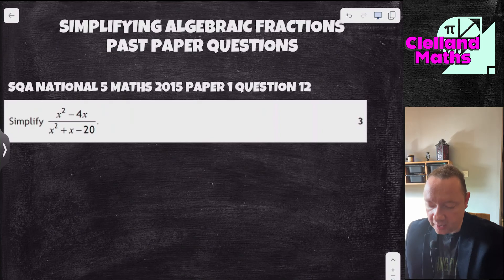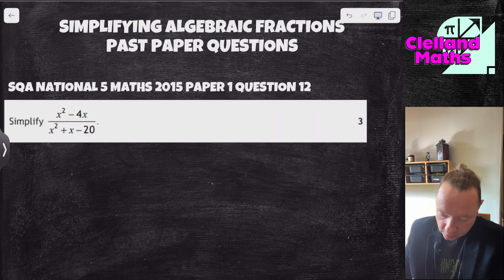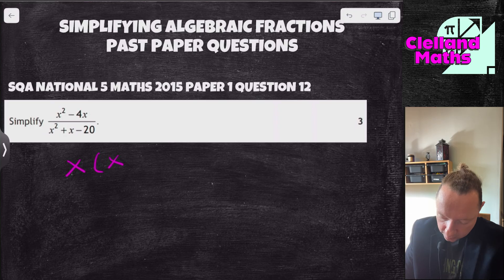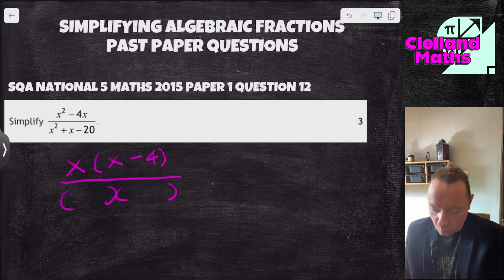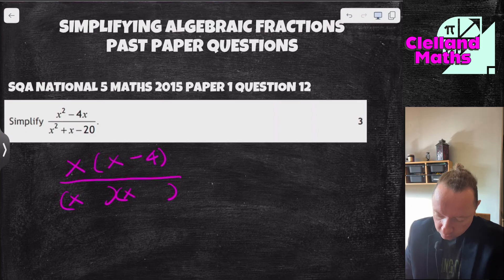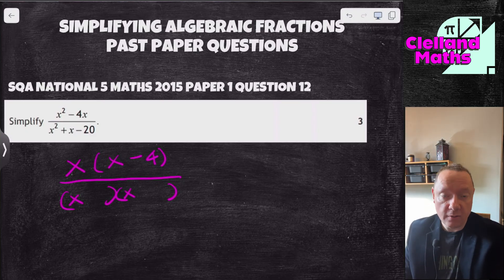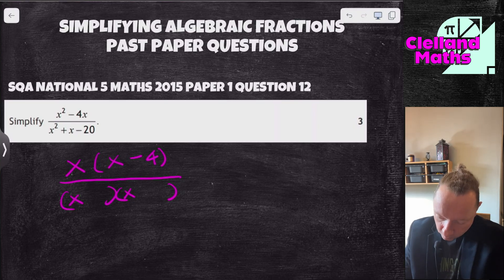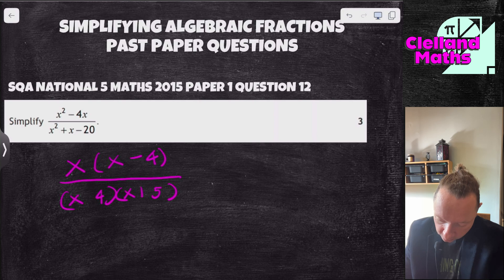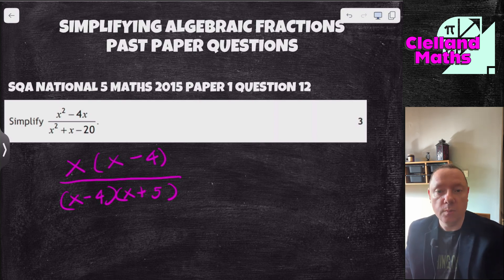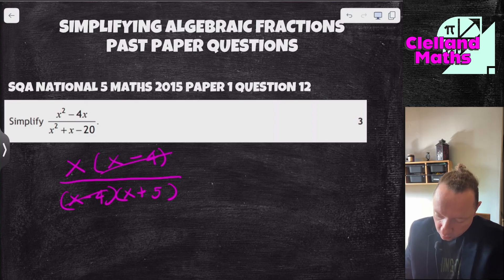Past paper question: National 5 Maths 2015 paper 1 question 12. Simplify x² minus 4x over x² plus x minus 20. The top has common factor x, giving x(x-4). The bottom: two numbers multiply to 20 and add to 1 — that's 5 and minus 4, so (x+5)(x-4). Cancel (x-4), leaving x over x plus 5.